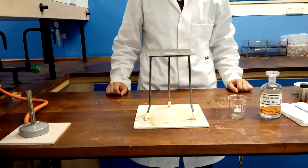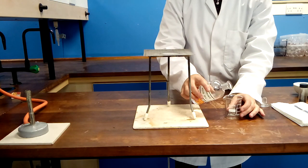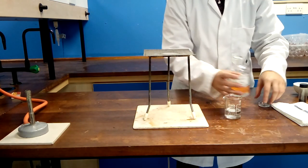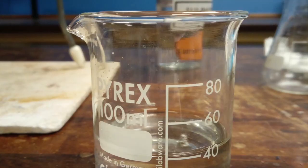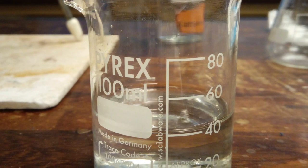First you'll have to measure out 40 cm cubed of sulphuric acid. It is not necessary to be too accurate here so you can just use the graduations on the beaker. Make sure that the surface of the liquid lines up with the 40 cm cubed mark.